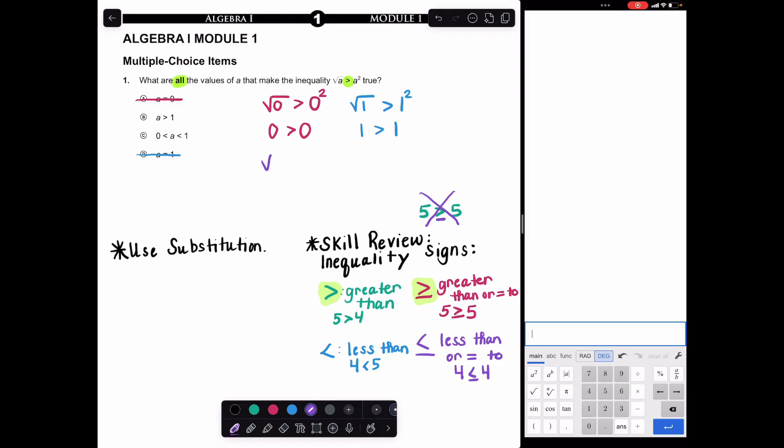The square root of nine compared to nine squared: the square root of nine is three, and nine squared is 81. If you didn't know either of those, I pulled up the Desmos calculator on the right-hand side. That's the calculator you'll have access to on the Keystone exam. Three is not greater than 81. If it's true for nine, it's true for all values greater than one.